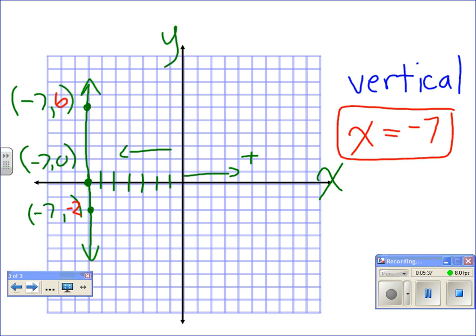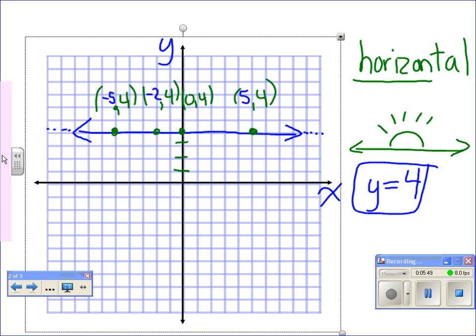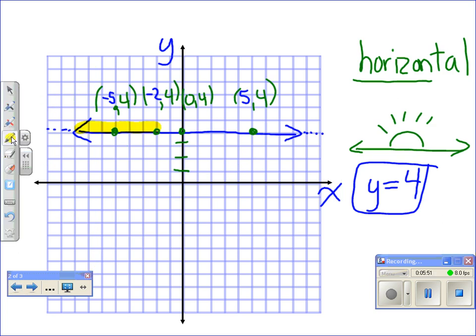So these are our three types of lines. Vertical lines going vertically, with a formula of x equal to something. Horizontal lines, with an equation of y equal to a number.